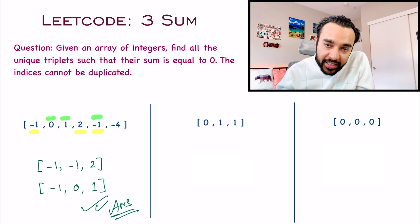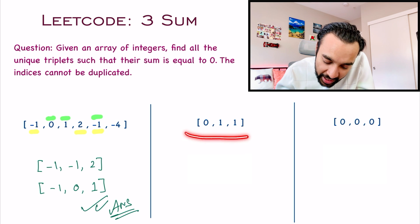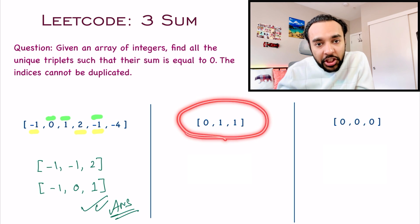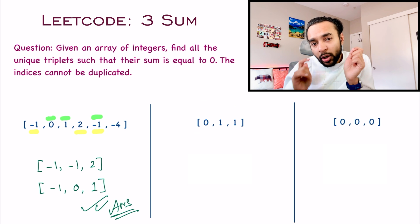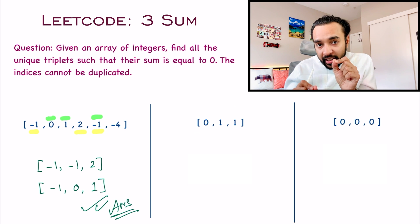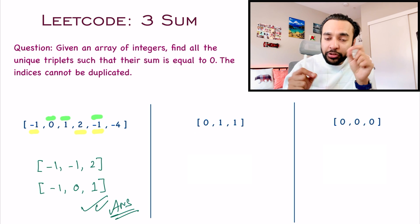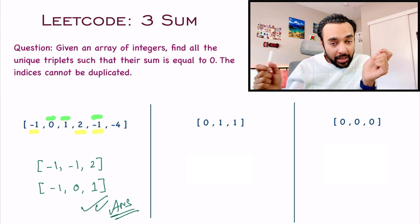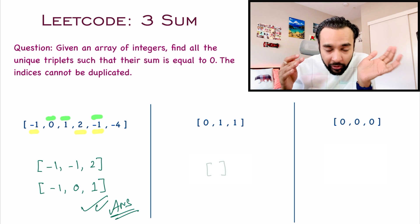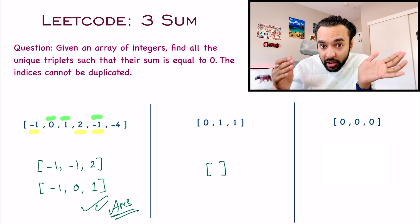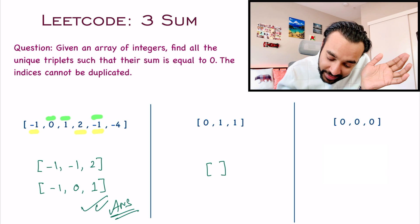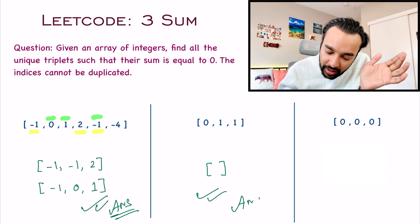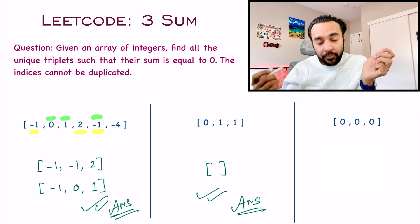In your next test case, you have three elements: zero, one, and one. This is the only triplet, and if you sum all of these elements, the sum will not be zero. So for this particular test case, an empty list will be your answer.